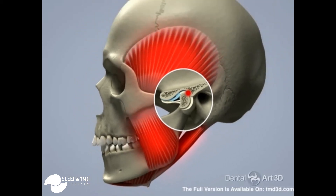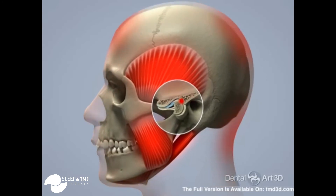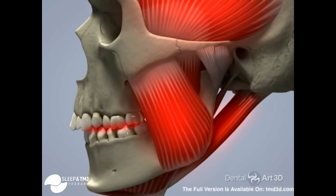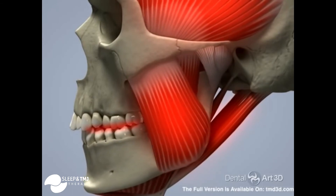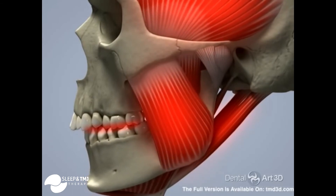In addition, the muscles could be in a state of hypertonus or spasm, which can result in tension headaches. An incorrect position of the lower jaw can result in parafunctional activity of the muscles, such as clenching and grinding.